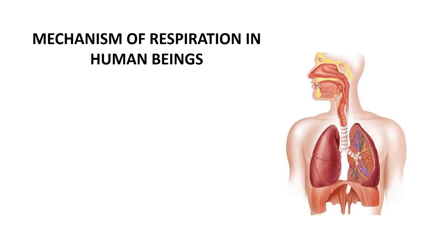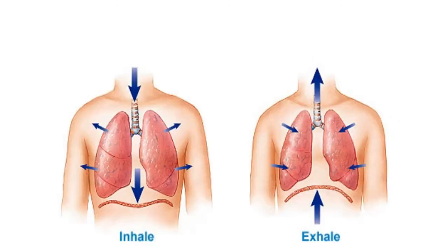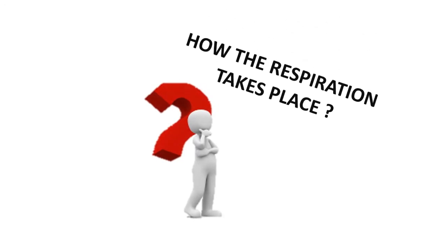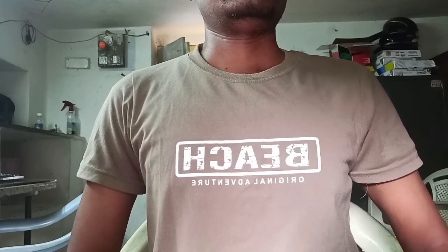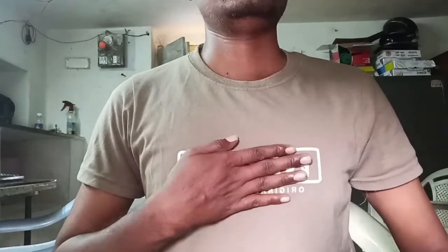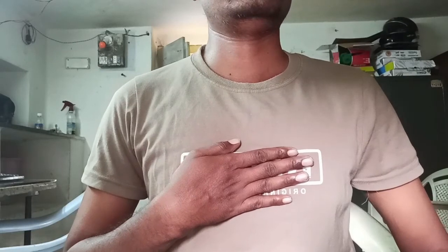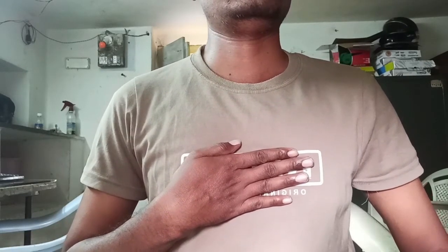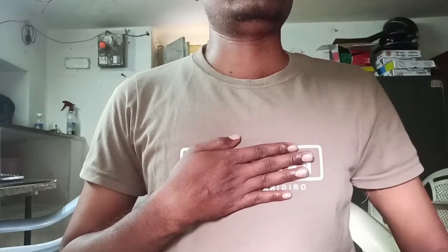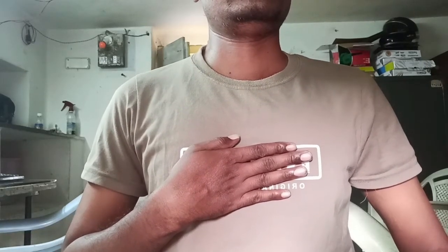We know that breathing is the process of inhaling and exhaling air. The organ mainly participating in breathing is the lungs. How does respiration take place? You have to observe your chest for some time. You observe that our chest part moves forward and backward, just a little bit. This is the action of the lungs.